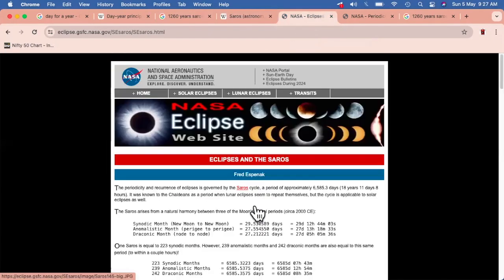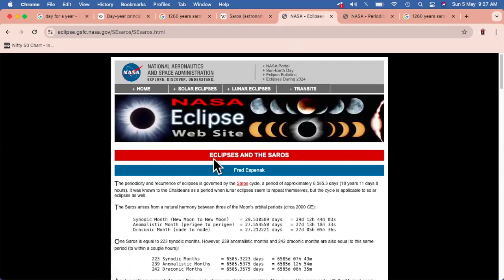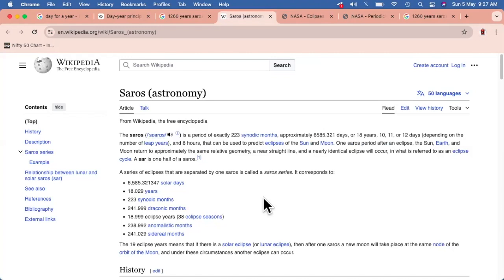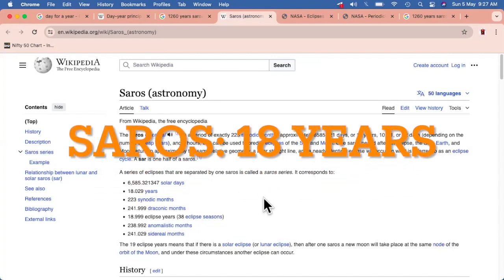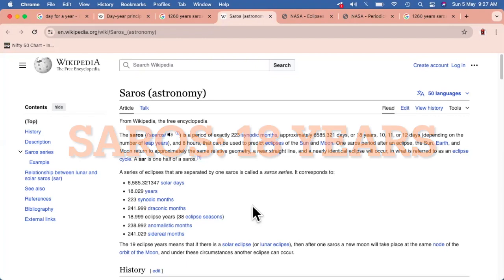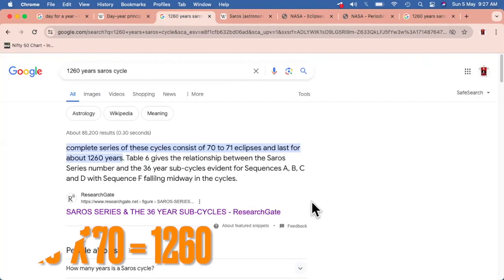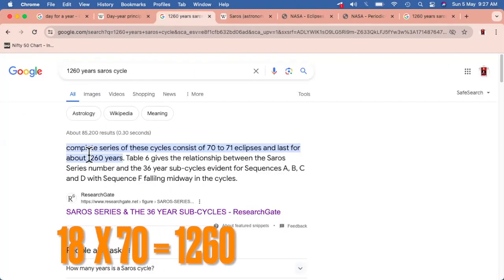So this is just a short description that the Saros cycles are basically of 18 years. This is critical and very important for us to understand, as it has been said that 18 into 70 gives us 1260 years. We'll get into the calculations part also.